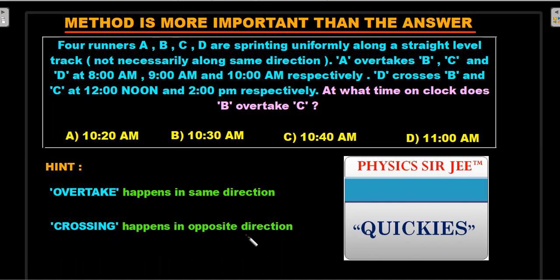I hope you have given it a fair try. Let's move forward and try to see the unconventional method. The conventional method would have been to take this linear motion, write some equations and then try to solve for the time instances that are given in the question. I'm not going to look at that. We are going to actually plot a graph of all these four runners.